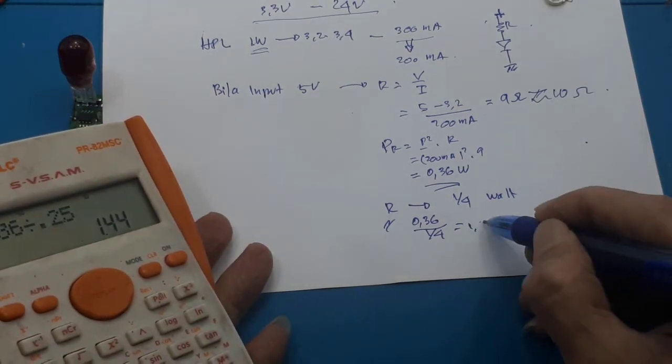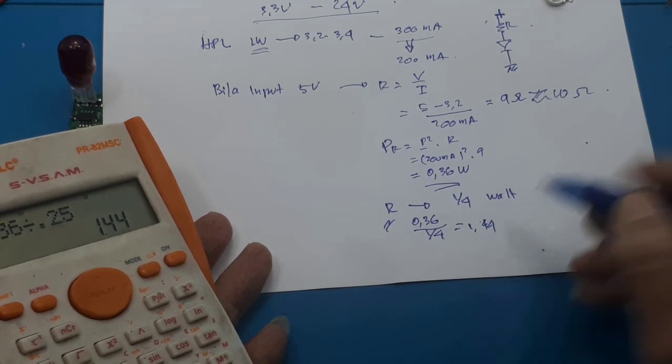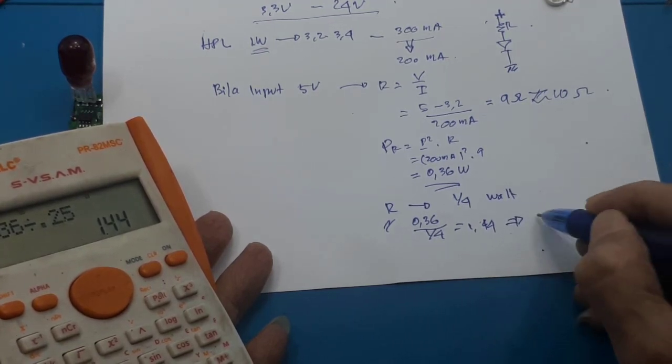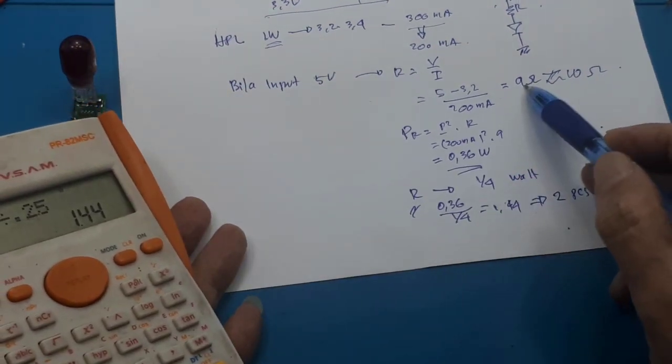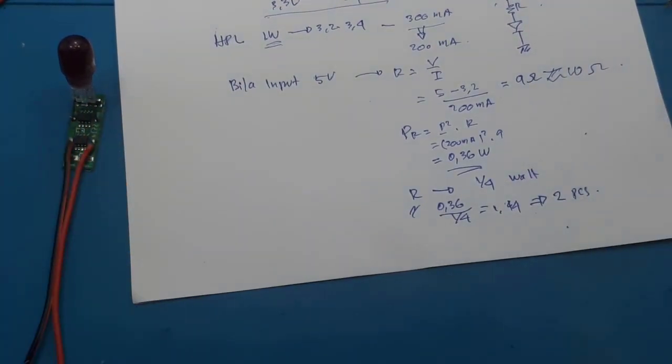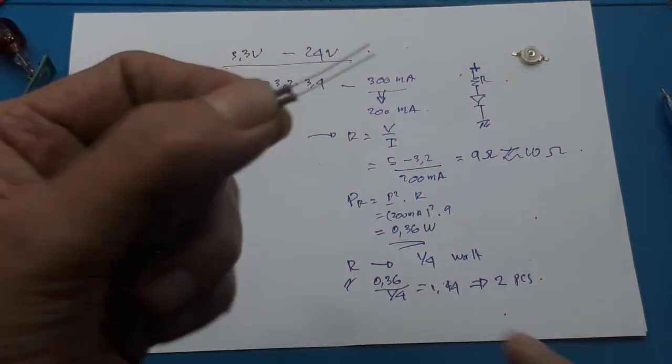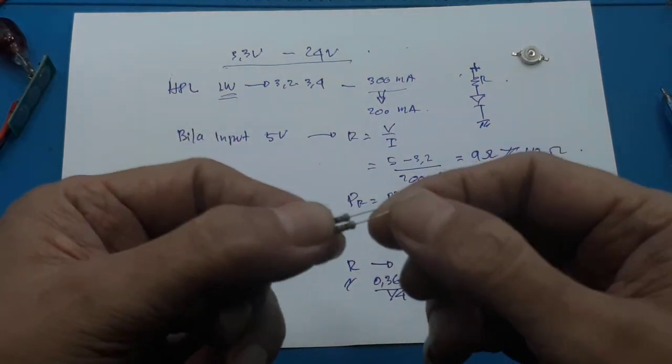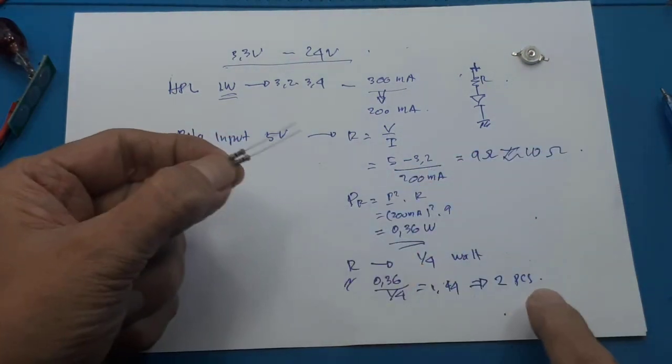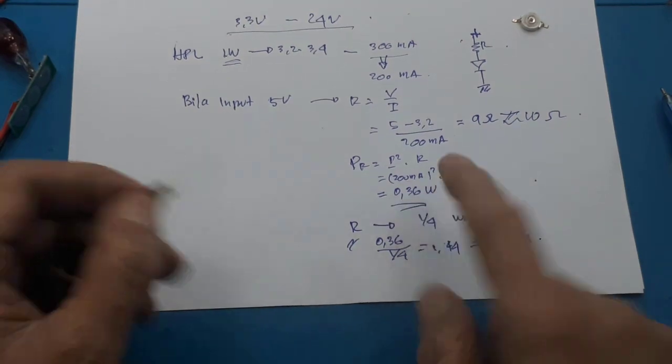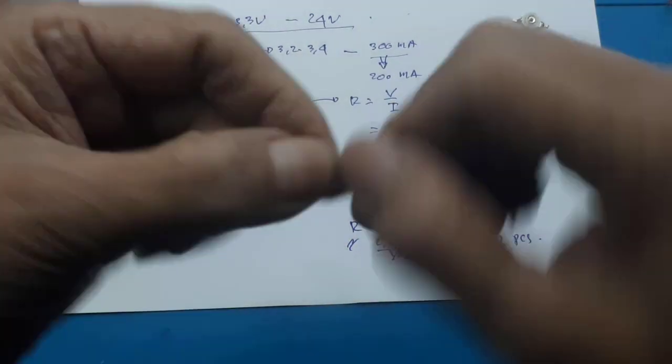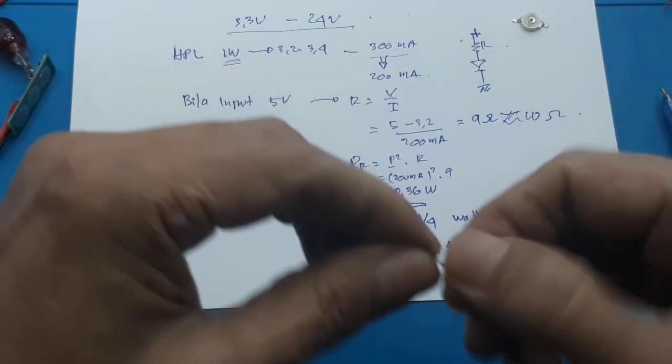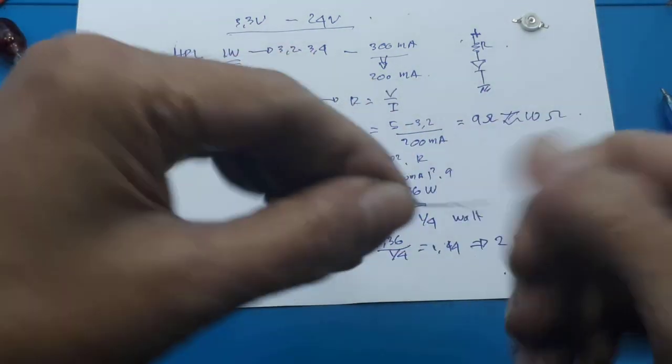Ini didapat 1.44 atau mendekati 2 buah. Jadi kita paralel 2 pcs. Karena yang saya cari 9 ohm, jadi saya cari 18 ohm saya paralel. Saya lihat dahulu resistor saya ya. Resistor 18 ohm ada, jadi saya paralel 2 buah agar mendapati daya di atas 0.36. Paham ya bro? Saya paralel dahulu.